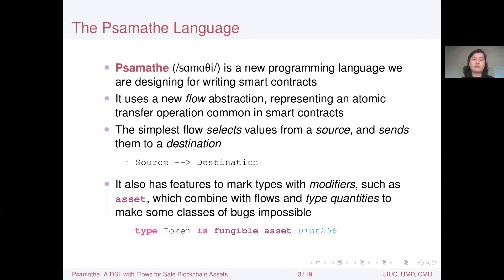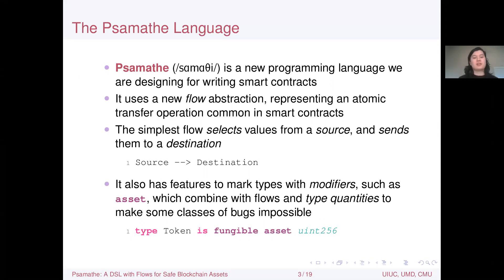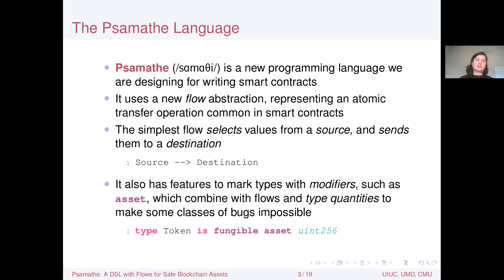Samathi uses a new flow abstraction, which represents an atomic transfer operation. This operation is very common in smart contracts, so having a language primitive for it is useful and convenient, but it also combines with other features to make writing smart contracts safer. The simplest kind of flow selects values from a source and sends them to a destination, written as: source arrow destination.